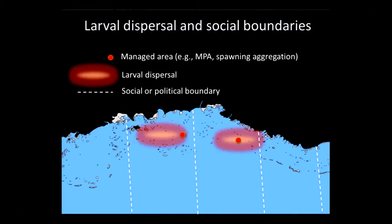Now, there's no boundaries in this system, so any benefits that result from that kind of management system are retained within the social boundary of the system. But if you actually start to subdivide the system a little bit more, we've got these political or social boundaries, these white dashed lines. The larvae that are dispersing from those managed sites are still being retained within those social units, so any action that people are taking to protect spawning stock, they're going to be the ones that benefit.